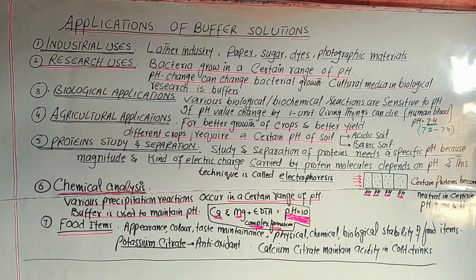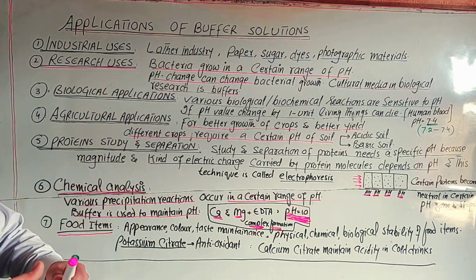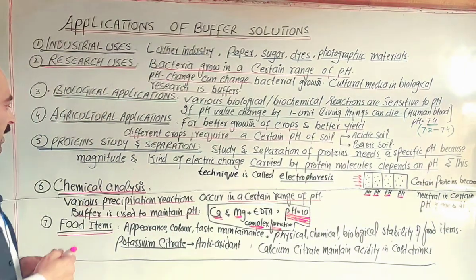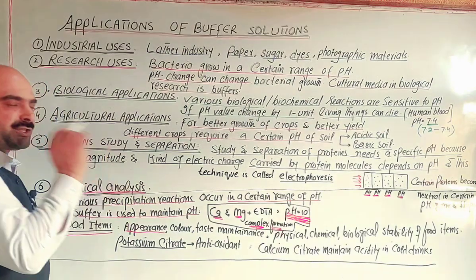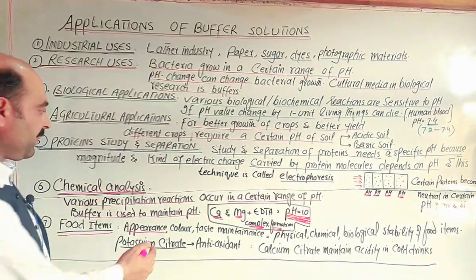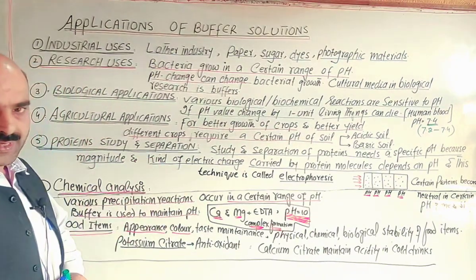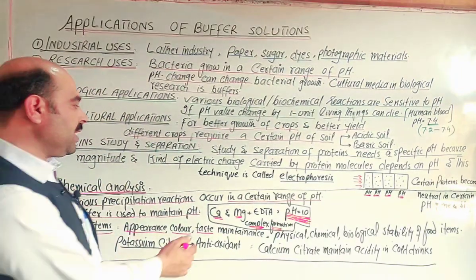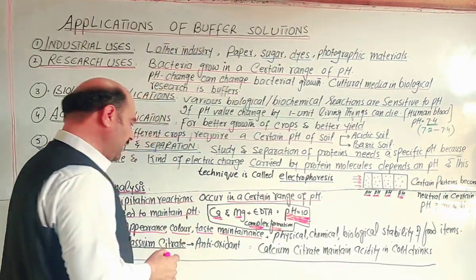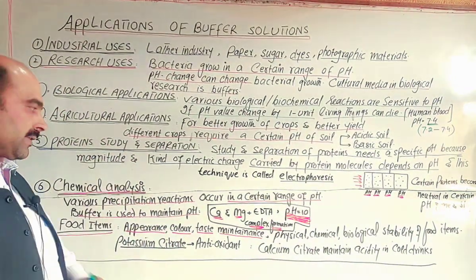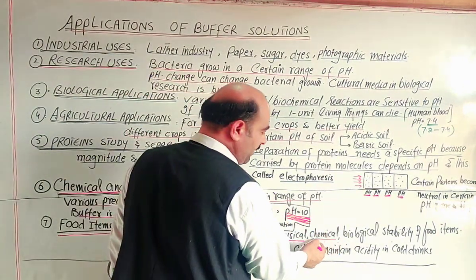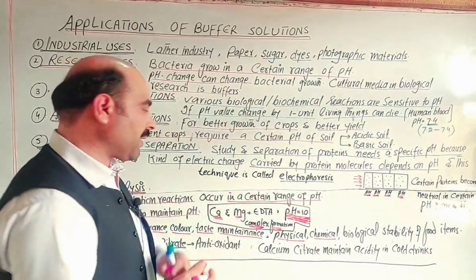The last application is food items. The quality, color, and taste of food items are kept natural and maintained at standard by using pH and buffer solutions. The appearance of fruits and vegetables must not be spoiled — their color should not become dull and their appearance should not change. The taste, color, and appearance are maintained. The physical appearance and chemical composition of the food items are kept stable.